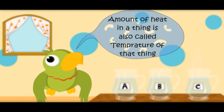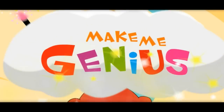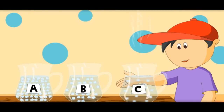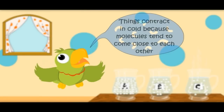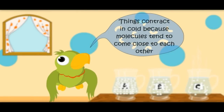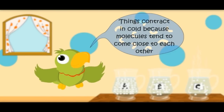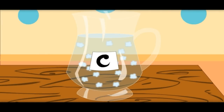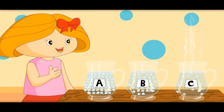The amount of heat in a thing is called the temperature of that thing. With a magic wand, let's see what molecules are doing in the jugs. In jug A, molecules are contracting due to cold. Things contract in cold because molecules tend to come close to each other. In jug C, molecules are moving fast and going away from each other. Things expand when the molecules move away from each other.